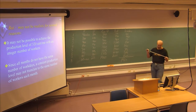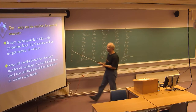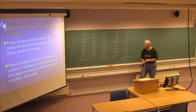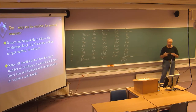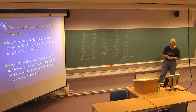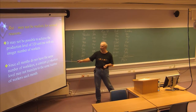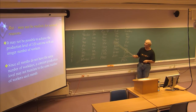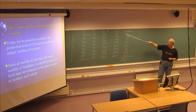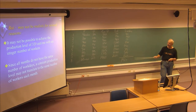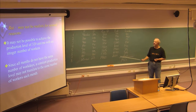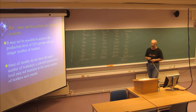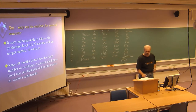This is not entirely realistic for some reasons. It might not be possible to achieve a production level of 320 units per month with an integral number of workers, assuming all workers are employed full time. Also, since all months do not have the same number of working days, a constant production rate might not translate to the same number of workers each month — February has only 28 days, January 31, and there could be Easter and other holidays. So the number of working days is not the same for each month, and we need to take that into consideration.